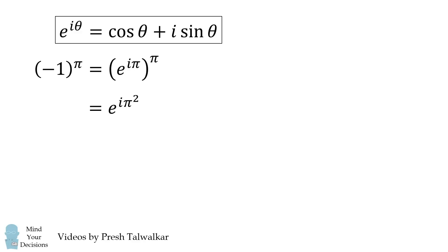Now we again use the formula for e to the i theta and we substitute in theta is equal to pi squared. So we get this is equal to cosine of pi squared plus i times the sine of pi squared. And that's the exact form. We can also get the approximate form which is negative 0.903 minus 0.430 i. And that's what negative 1 to the power of pi is equal to.